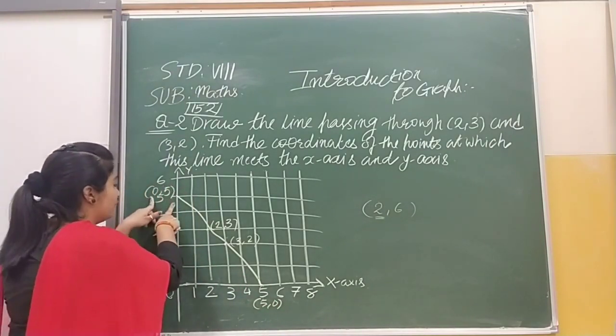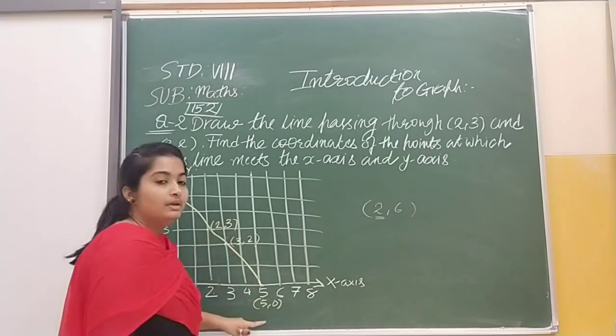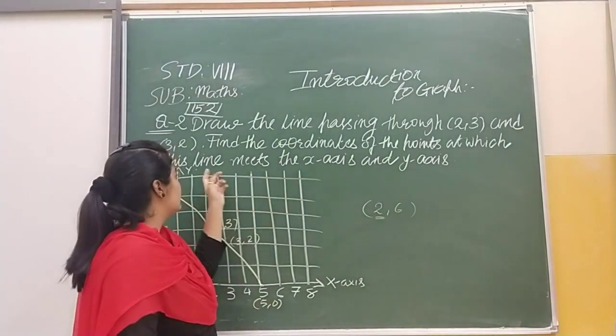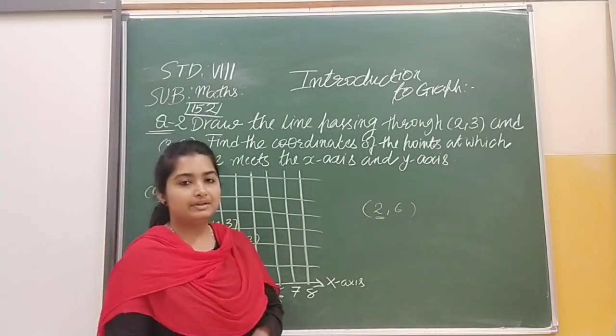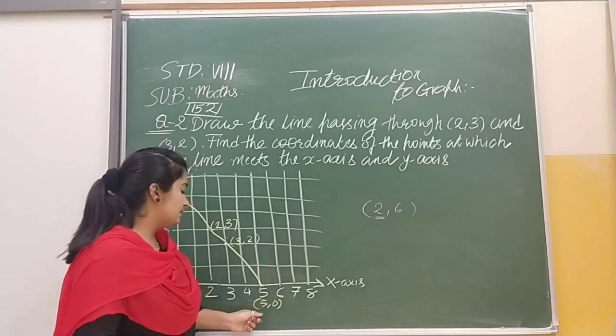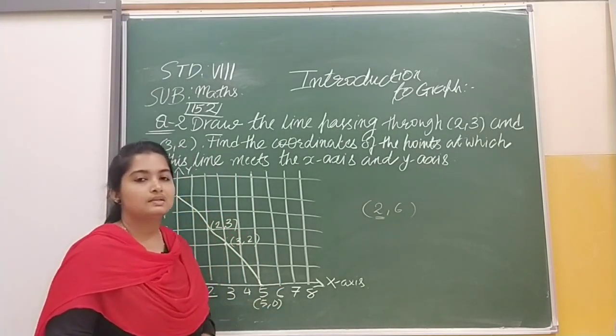And same way, here x-axis is 0 and y-axis will be 5. So here we have (0,5), (2,3), (3,2), and (5,0). So we were asked in the question where this line meets the x-axis and y-axis. We can give the answer that is (5,0) and (0,5).